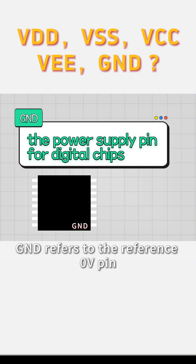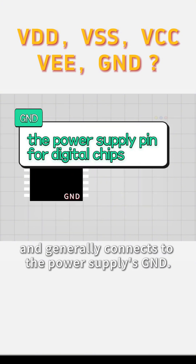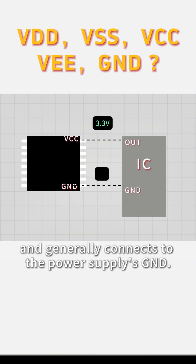GND refers to the reference 0V pin for a chip's power supply and generally connects to the power supply's GND.